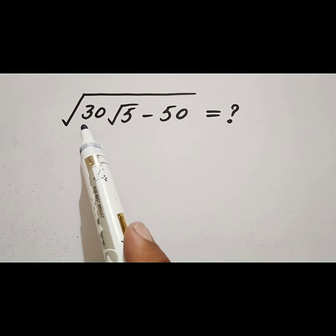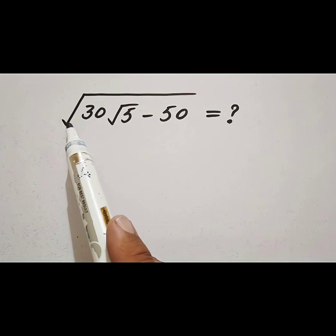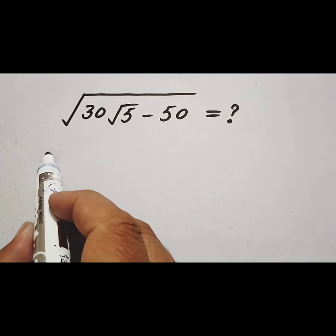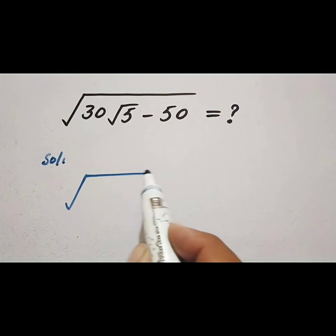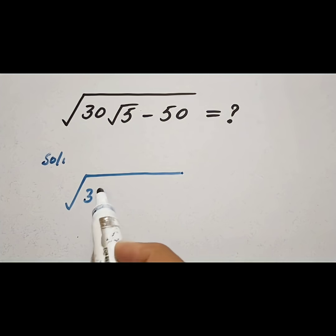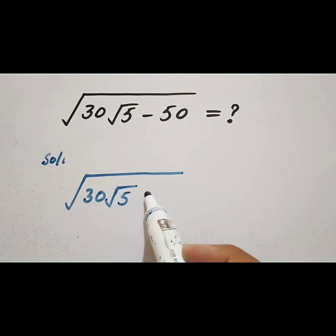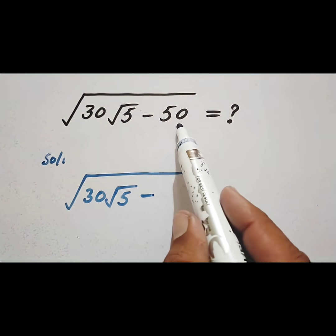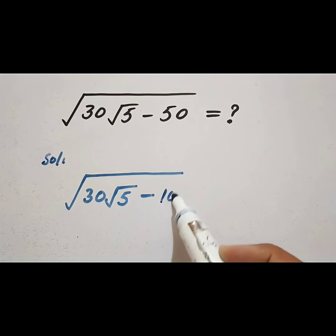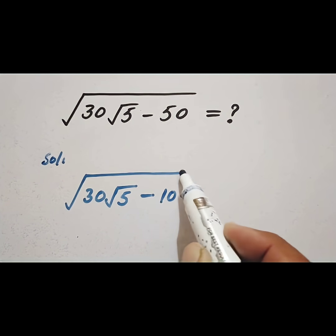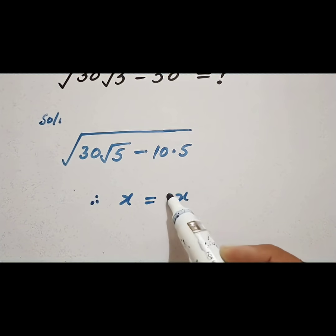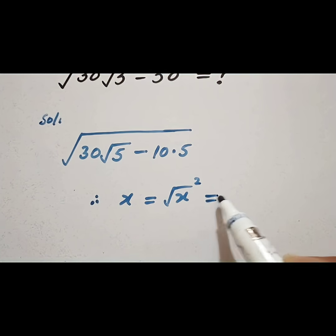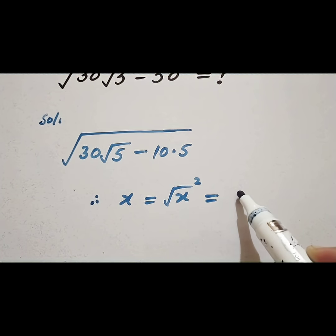Welcome, welcome. Let's simplify this very nice radical problem: square root of 30 into square root of 5 minus 50. We know that 50 is equal to 10 multiplied by 5, and we know that x is equal to the square root of x squared.